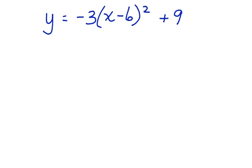Here's an equation for a parabola already in vertex form. First, let's identify h and k, because we know h and k will give us the vertex. h is 6, k is 9. The vertex of this parabola is at 6, 9.